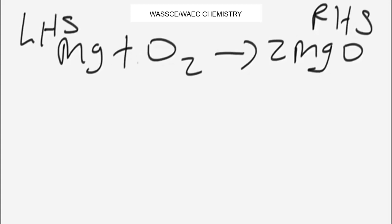Let's run through this equation. Here we have one atom of magnesium on the left and two atoms of magnesium on the right. Whenever you see a number beside a compound or element, that number applies to every element in that compound, or to that element alone if there is just one element.